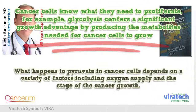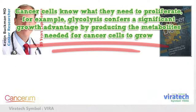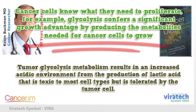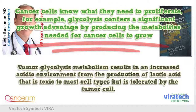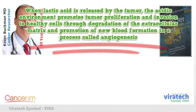What happens to pyruvate in cancer cells depends on a variety of factors including oxygen supply and the stage of the cancer growth. Tumor glycolysis metabolism results in an increased acidic environment from the production of lactic acid that is toxic to most cell types but is tolerated by the tumor cell. When lactic acid is released by the tumor, the acidic environment promotes tumor proliferation and invasion to healthy cells through degradation of the extracellular matrix and promotion of new blood formation.